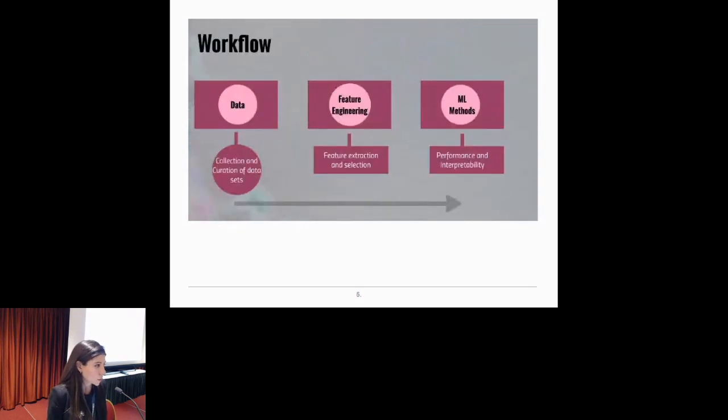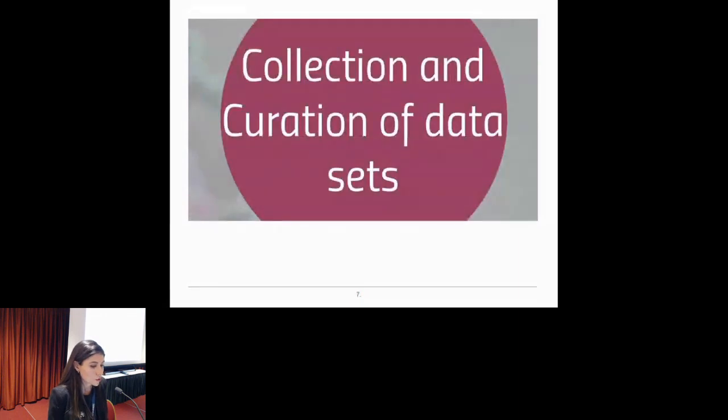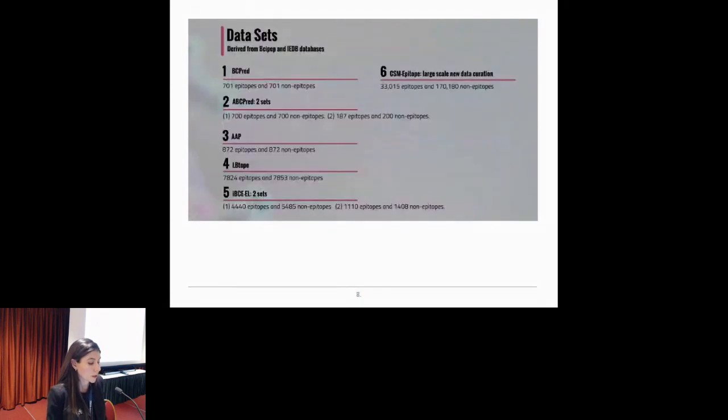So the methods that we use, we start with the data. In this work, we analyzed and we collected a comprehensive list of previously benchmarked datasets. On the left of this slide, you can check five previous methods and the dataset that they have curated. We use all of them to analyze, train, test, and evaluate our model. And on the right, we also curated a new large-scale dataset, and we will release it. And all of these sets are derived from BCPAP database or IEDB database, which both are composed of only experimentally proved epitope data points.